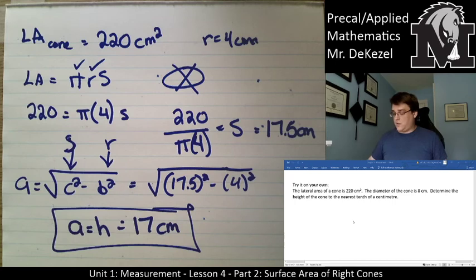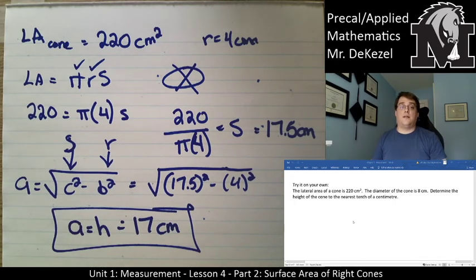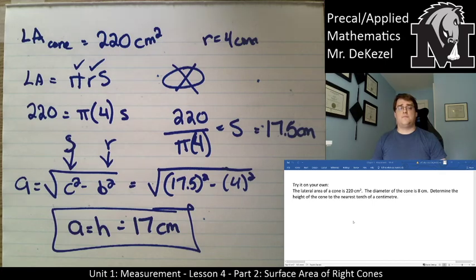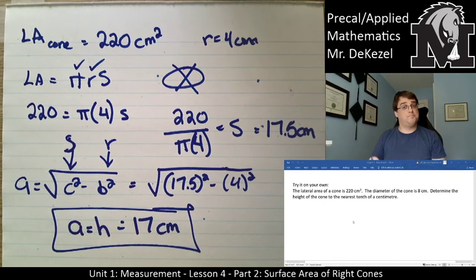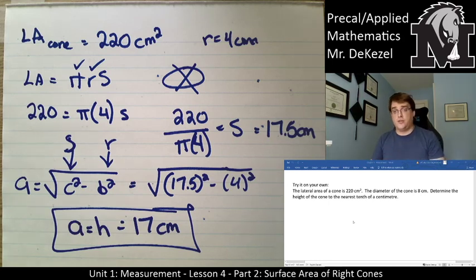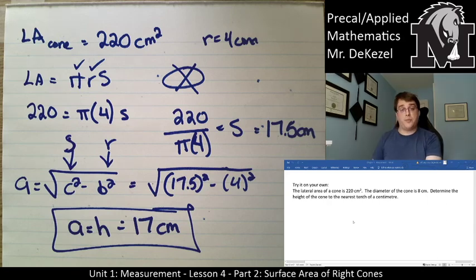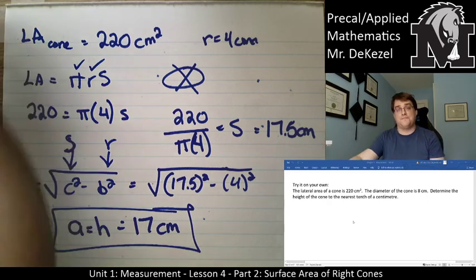It's 17 centimeters — not squared, just centimeters, because it's a length. Again, it makes sense that it's barely less than the slant height because the radius is so small compared to the height. That's all for today. Hope this was helpful. There's an exit slip and questions in the document, and next time we'll be doing lesson 1.5. Thank you very much.